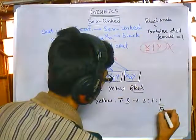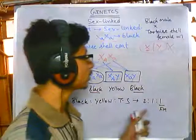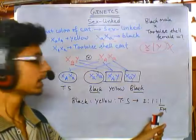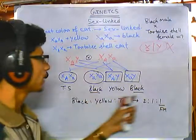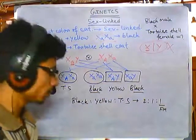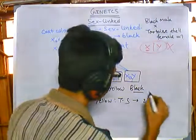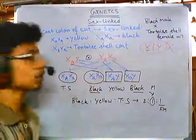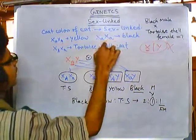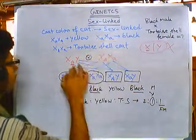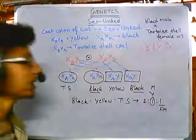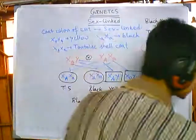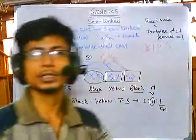The second question was whether we can get a tortoiseshell male. The answer is no — we get only one tortoiseshell offspring and that is female. Two of the offspring are black (one male, one female) and one is yellow, which is also male. This is the sex-linked inheritance answer.